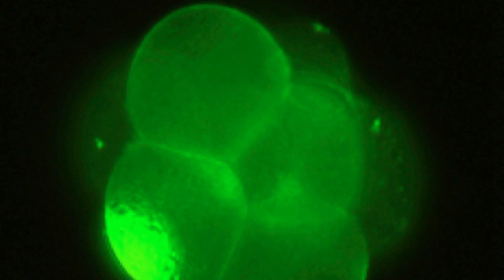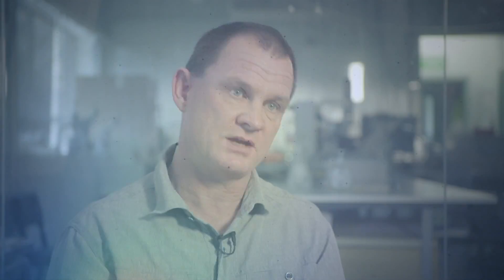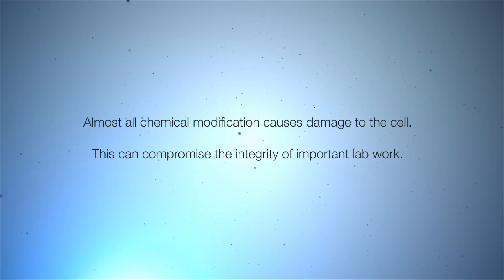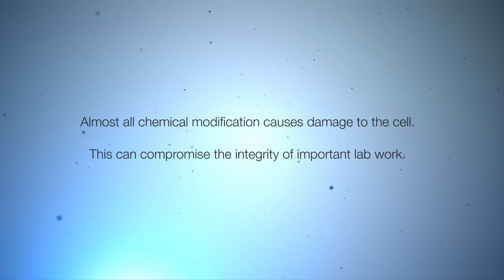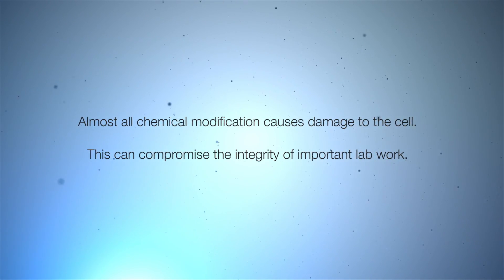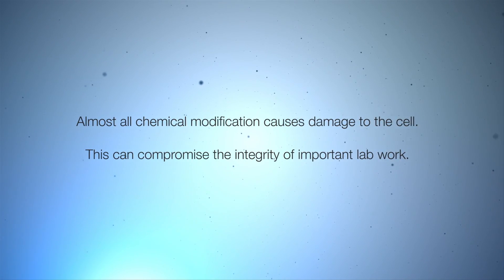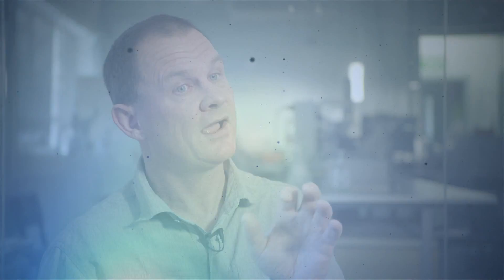We can paint on fluorescent molecules that don't exist in nature or chemical things that don't exist in nature. The alternative method is chemical modification, but our construct doesn't do that — it actually leaves them completely normal.